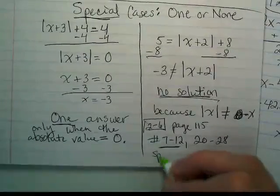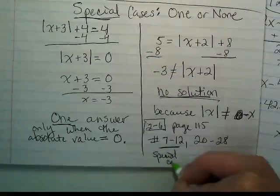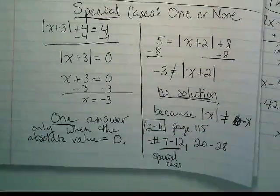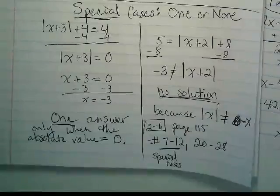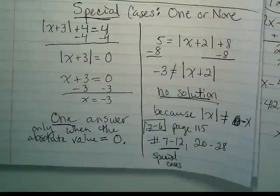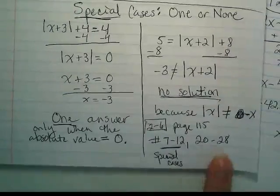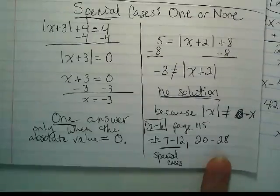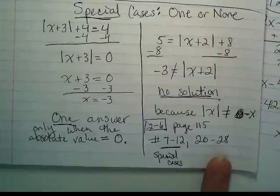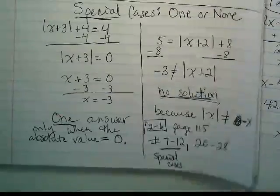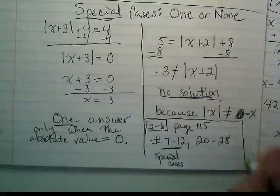7-12 are special cases. So with 7-12, you're either going to get one answer or no answer. Okay? 20-28 is a little bit of a mix. Some of them will have no answer. Some will have one. Some will have two.